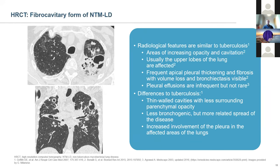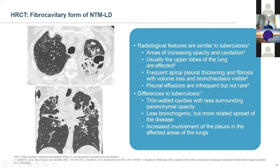Examples of gross cavitation can be seen in fibrocavitary NTM disease. Patients will often present as if they have TB — with hemoptysis, fever, and other symptoms that are relatively uncommon in the nodular bronchiectatic form. This phenotype can occur with M. avium and M. abscessus, but you would also consider M. kansasii, M. malmoense, and other NTM species.